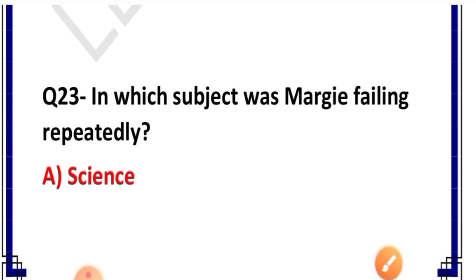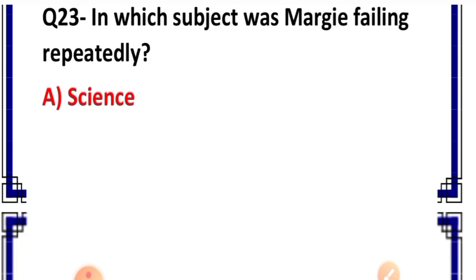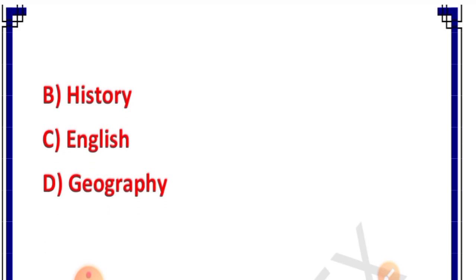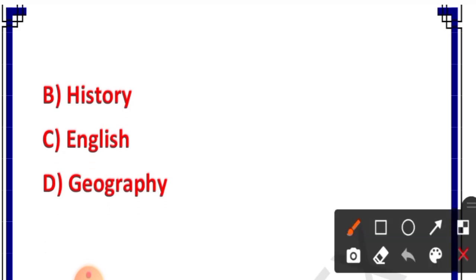Question number 23: In which subject was Margie failing repeatedly? Options: science, history, English, geography. Correct answer is option D — geography. Geography mein baar baar fail ho rahi thi Margie.